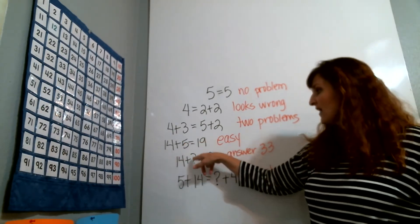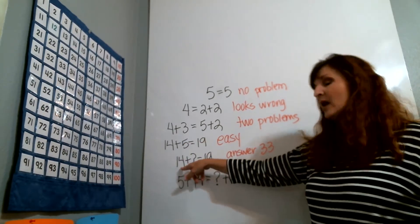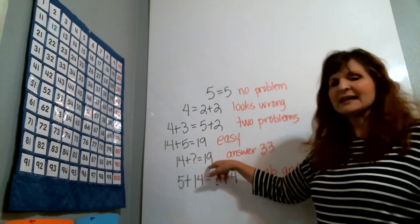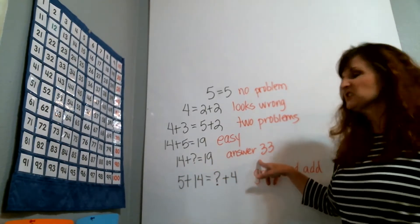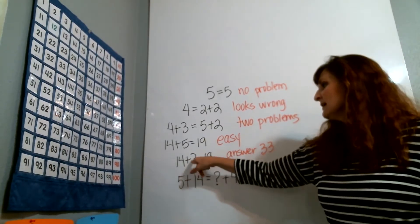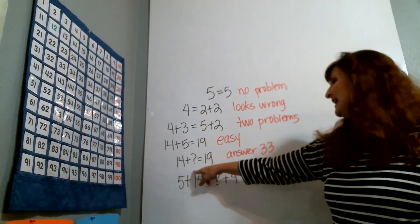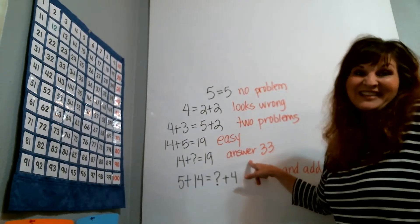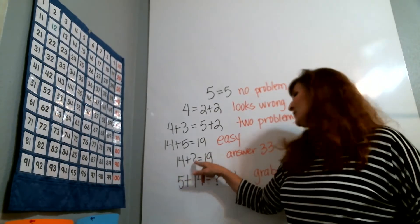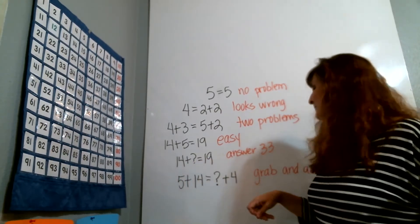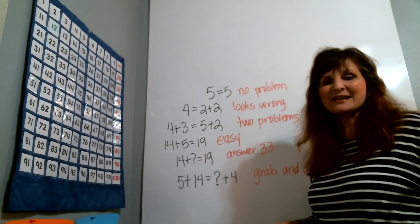But then when we would take that 5 out and we have a missing addend problem, 14 plus some number has a value of 19, they'll often just grab those two numbers, notice this equal sign or this plus sign, and then they just add them together and they say, oh, the answer is 33. So they'd say 14 plus 33 is equal in value to 19 without really understanding what that equal sign means.